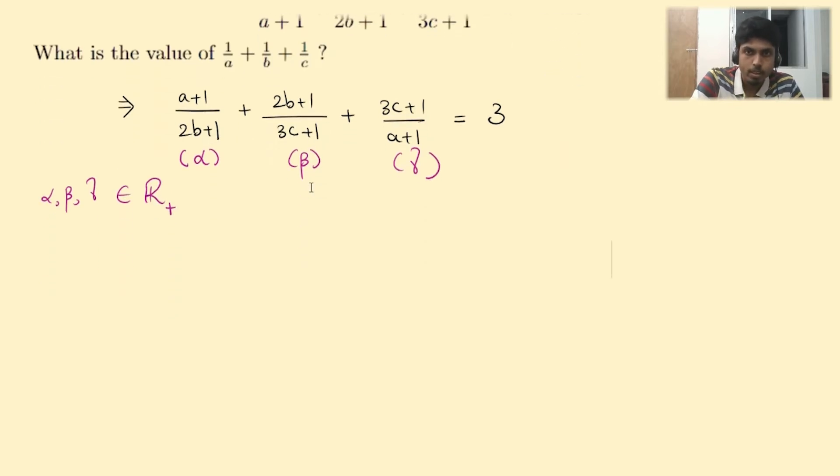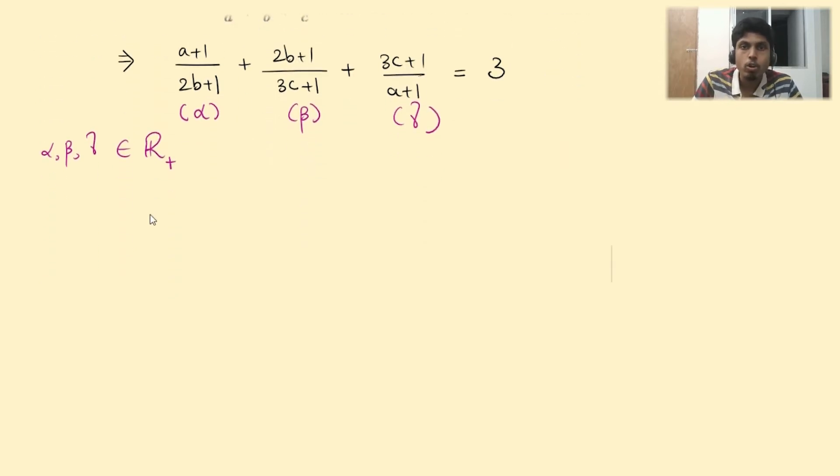Now one can apply AM-GM on α, β, and γ. So (α+β+γ)/3 is greater than or equal to (αβγ)^(1/3), which is the geometric mean.